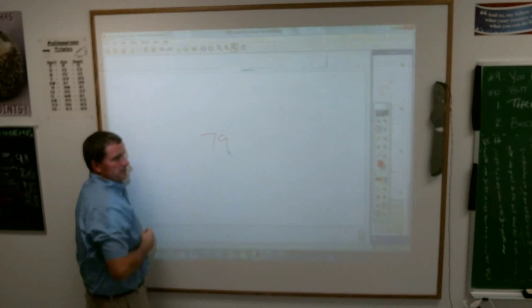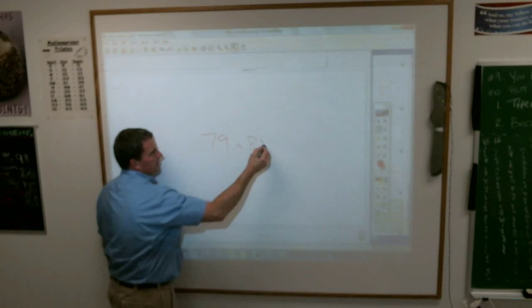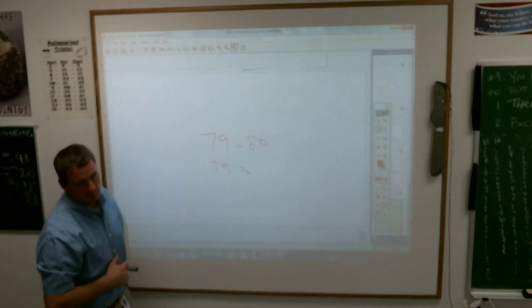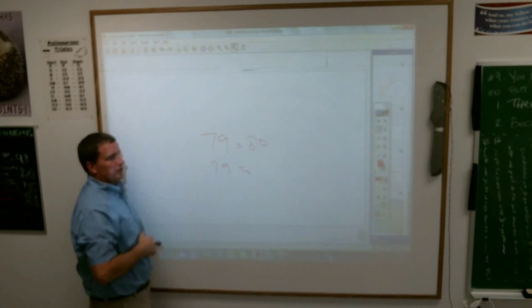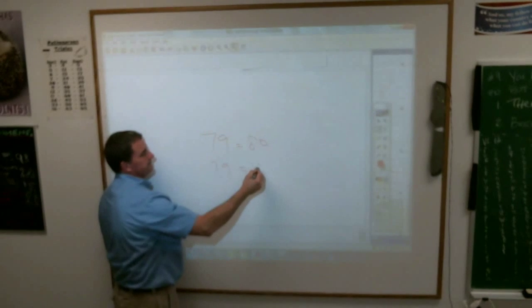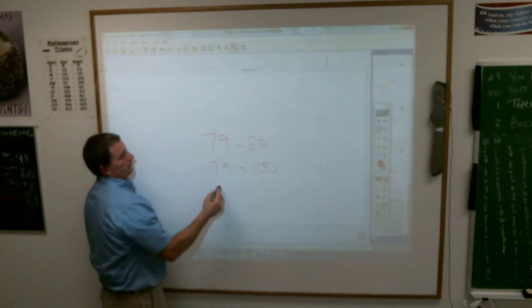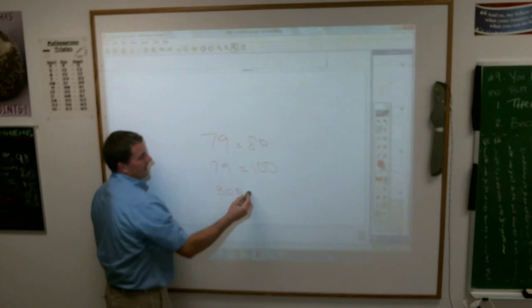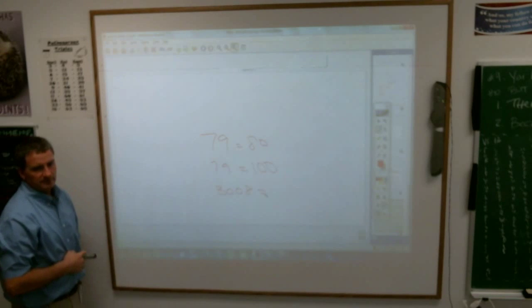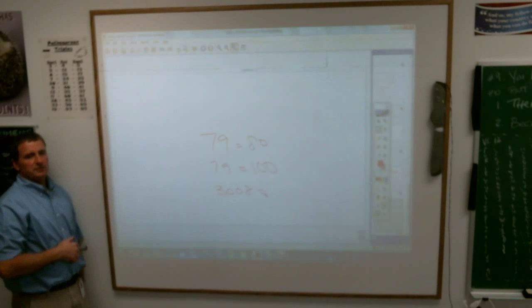79 rounded to the nearest tens is what, Danny? 79 rounded to the nearest hundred is what? The nearest hundred, Brooklyn. Rounded to the nearest hundred. What about 3,008 rounded to the nearest ten?